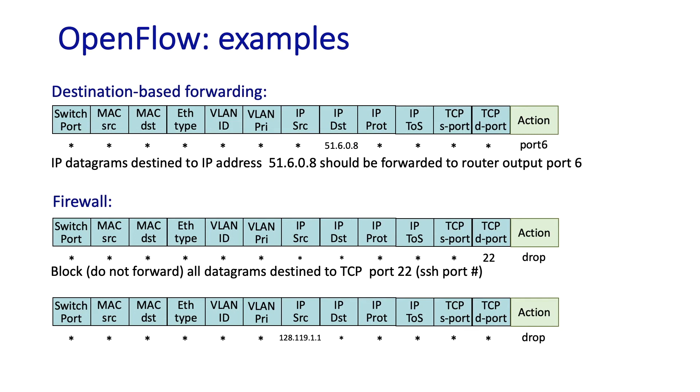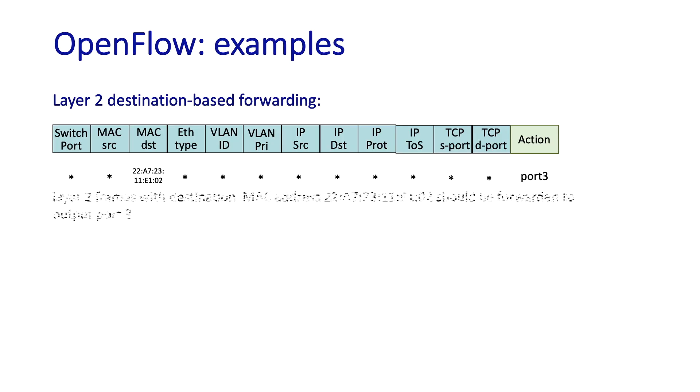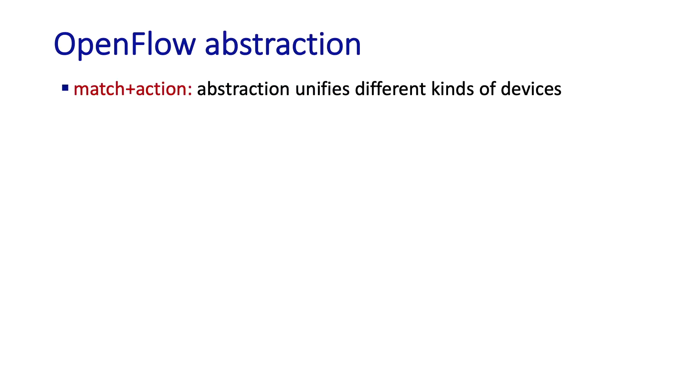The third example is also a firewall rule. It says to block all datagrams sent by host 128.119.1.1. This is a host being blacklisted. And this last example says that all layer 2 frames destined to this MAC address here should be forwarded to output port 3. This is just a traditional link layer forwarding of layer 2 frames.